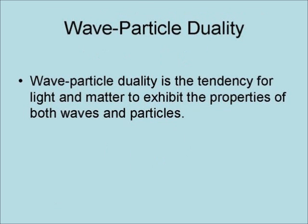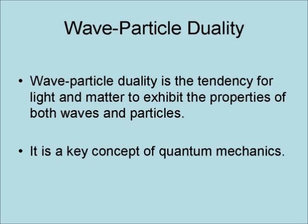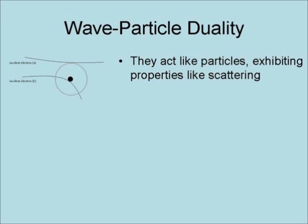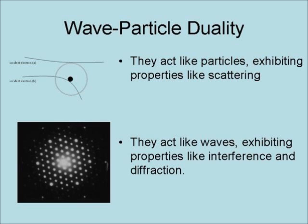Wave-particle duality is the tendency for light and matter to exhibit the properties of both waves and particles. It is a key concept of quantum mechanics. Light and matter sometimes act like particles, exhibiting properties like scattering. Other times, they act like waves, exhibiting properties like interference and diffraction.